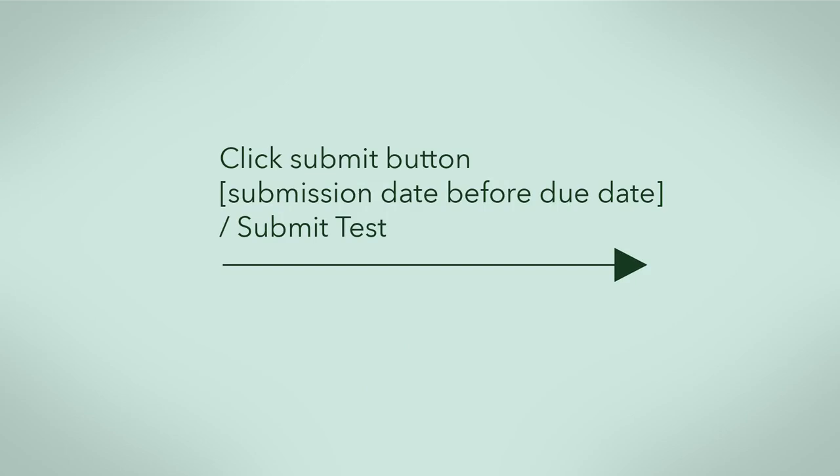The transition and action happens from a given state if the event occurs and the condition is true. As a basic example, suppose you are finished writing an online test. For your test to go from state in progress to submitted, the event will be click the submit button. The condition will be submission date is before due date, and the action will be submit test.